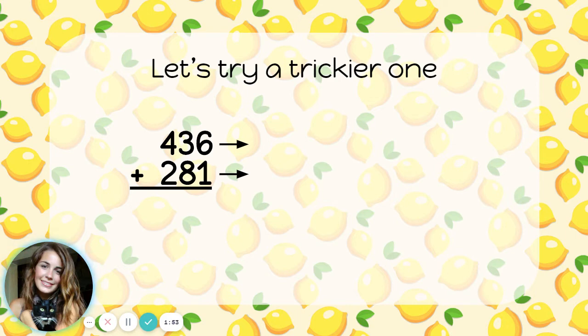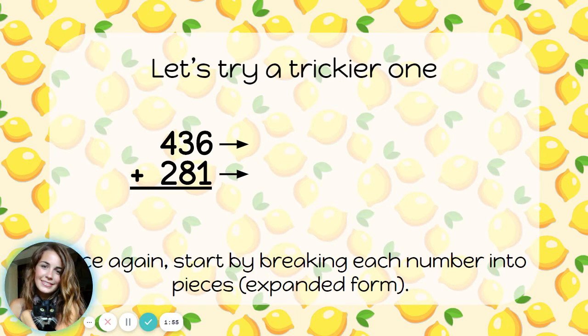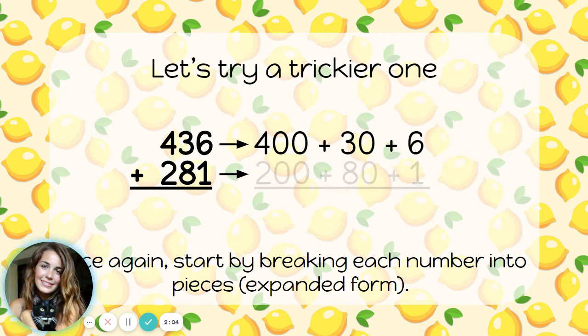Let's try a trickier one. Once again, I'm going to write each number in expanded form. 436 would be 400 plus 30 plus 6, and 281 would be 200 plus 80 plus 1.